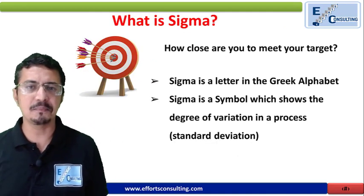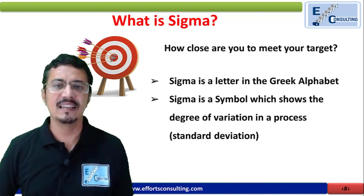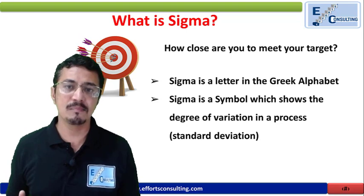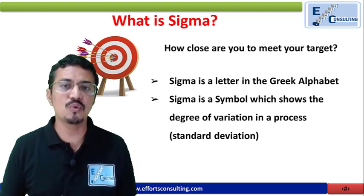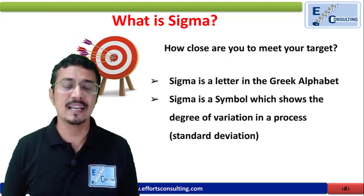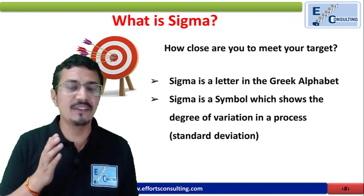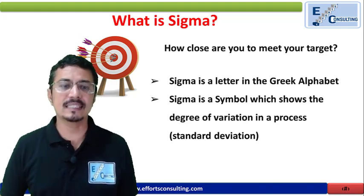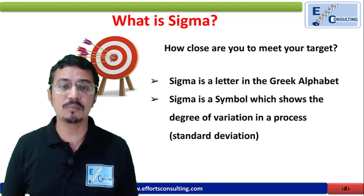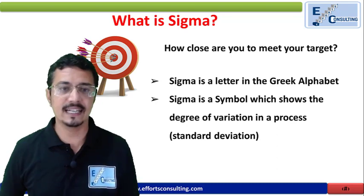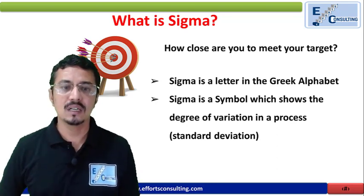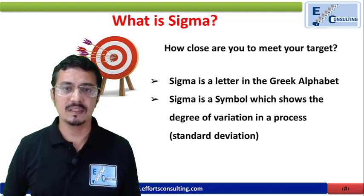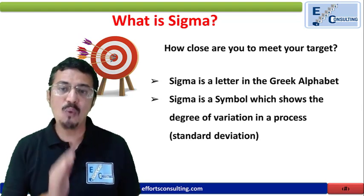What do you mean by Six Sigma? We are having a target and always we try to hit the target. Even in manufacturing or services, we have certain activities and processes in our department that we are supposed to complete, in order to reach the target and satisfy the customer. Six Sigma will tell you how close you are to meeting the expectation of the customer. Sigma is a Greek letter — the 24th Greek letter — and it is a symbol which shows the degree of variation in a process, also known as standard deviation. If you are deviating from the target value, the Sigma value gives you the idea of how much you are deviating.